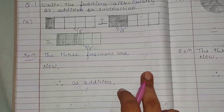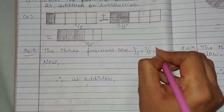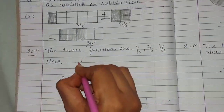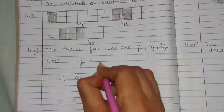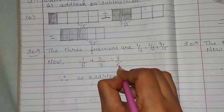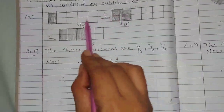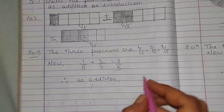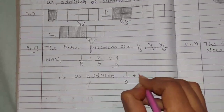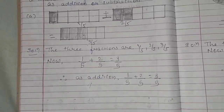Solution: The three fractions are 1 upon 5, 2 upon 5, and 3 upon 5. Now 1 upon 5 plus 2 upon 5 equals 3 upon 5. That means by adding these two fractions we get the third figure. Therefore, as addition: 1 upon 5 plus 2 upon 5 equals 3 upon 5.